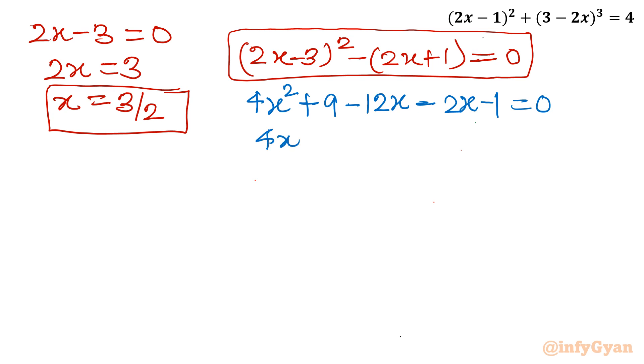So 4x² - 12 - 2 minus 14x, 9 - 1 is 8 = 0. Equation is divisible by 2. We will divide by 2. 2x² - 7x + 4 = 0.